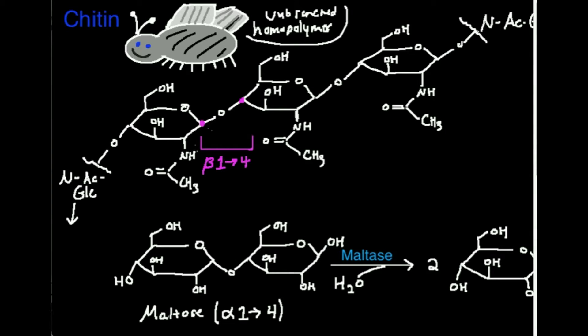Where do you find chitin? One of the main places is the exoskeleton of insects. If you've ever had a roach running around and you take a shoe and step on it — that crunching sound is literally the breakage of their exoskeleton. What you're actually breaking is the chitin. Chitin is the main constituent of their exoskeleton, and there's a massive amount of chitin in it. When you think of all the insects in the world, there's a ton of chitin produced.